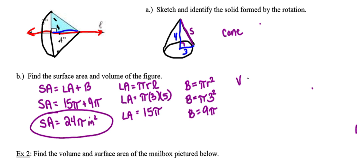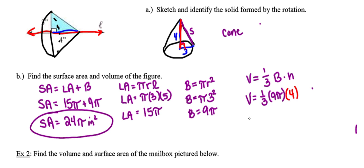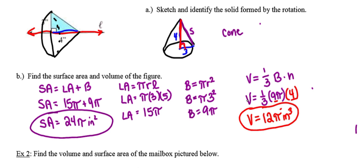Moving along to the volume, I find it by doing one-third times the area of the base times the height of the cone. The area of the base is 9 pi. The height is the perpendicular distance from the vertex down to the base — make sure to use the height rather than the slant height. So one-third times 9 times 4 gives 12 pi cubic inches. Since the problem doesn't ask us to round, I leave the answer in terms of pi.